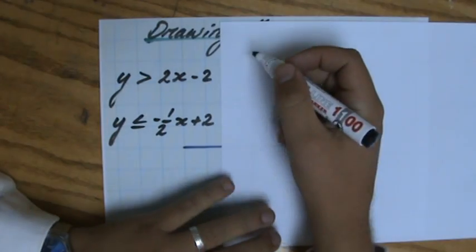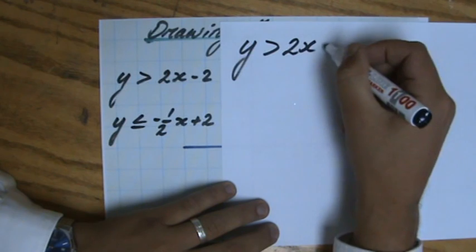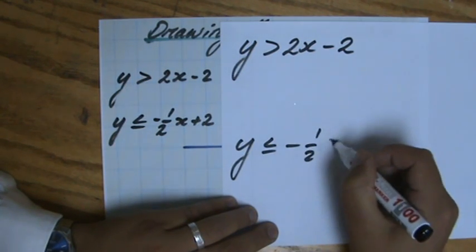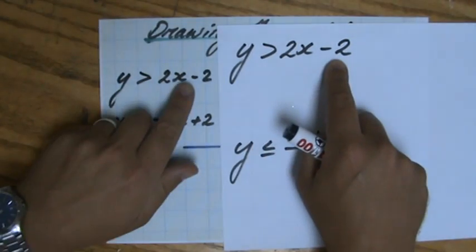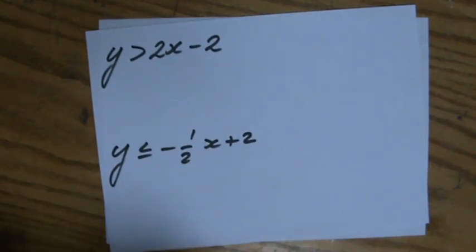I'm going to copy the inequalities here so I can make a table of values, because I need to find two coordinates to draw a line. I always do three to check myself: y > 2x - 2 and y ≤ -½x + 2.